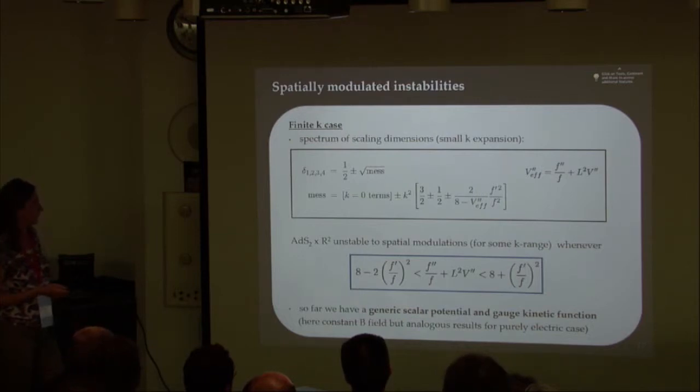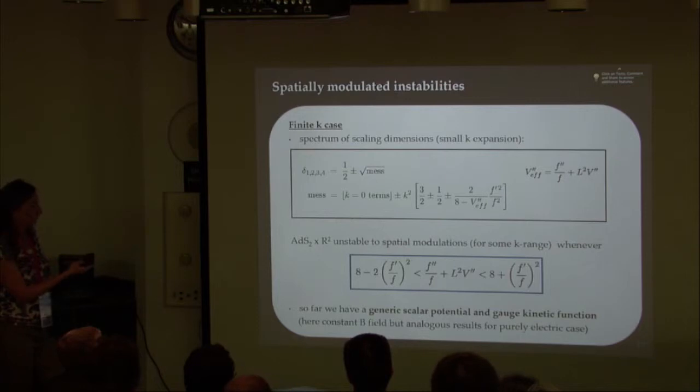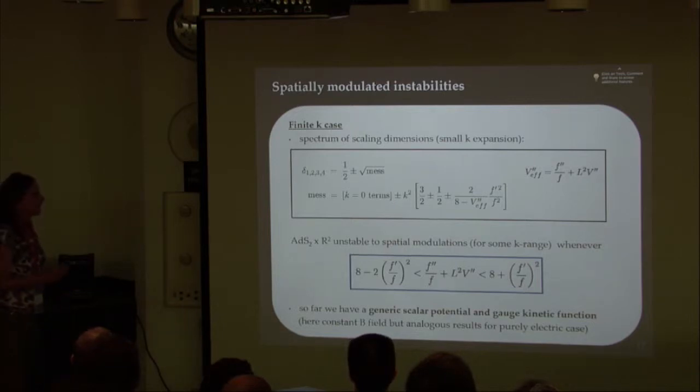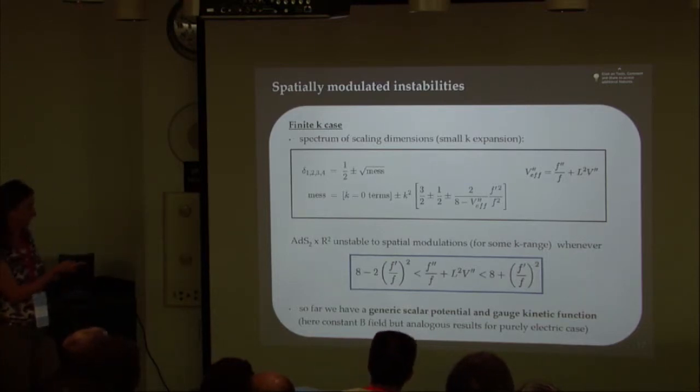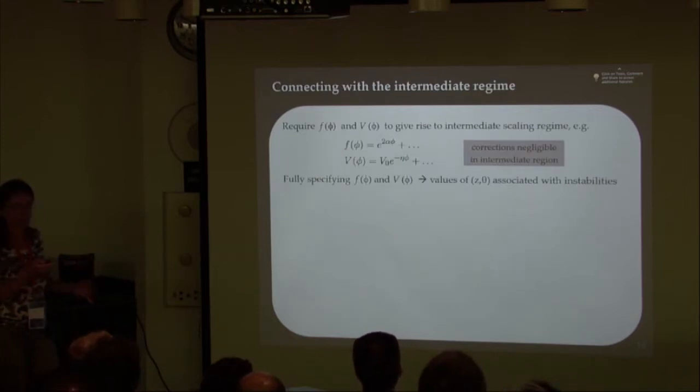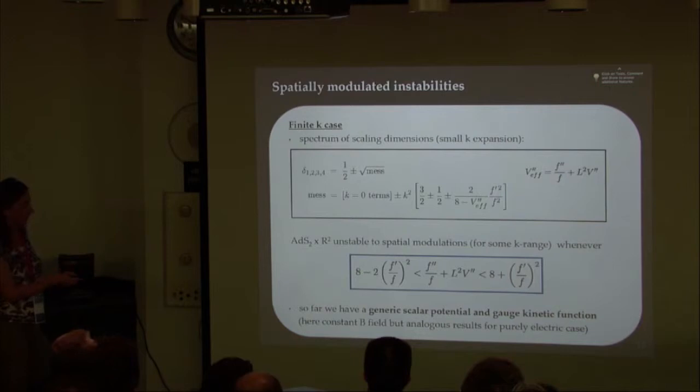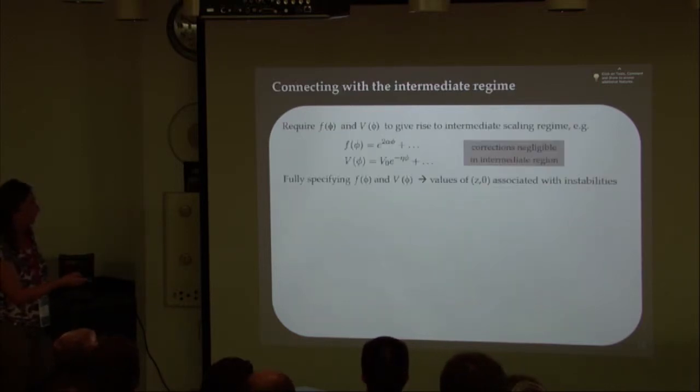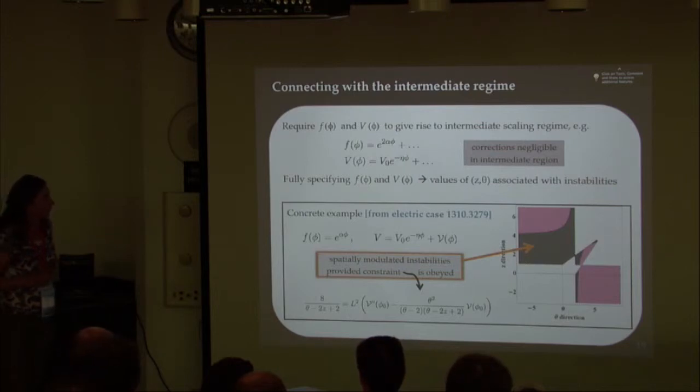But once you turn on finite momentum, the story changes. If you're looking at the spectrum, the scaling behavior of the perturbations, you'll now find there's a square root with many different terms. The point I want to emphasize is that once you turn on momentum, you'll have terms that can make the conformal dimensions imaginary, signaling the presence of instabilities. For the particular model I put up here with a magnetic field, you find there will be spatially modulated instabilities as long as these conditions on the potential and gauge kinetic function are satisfied.